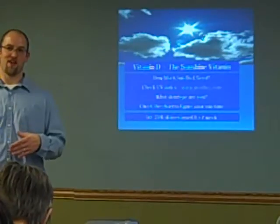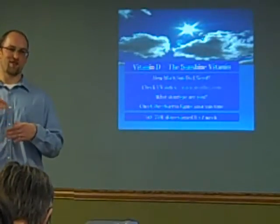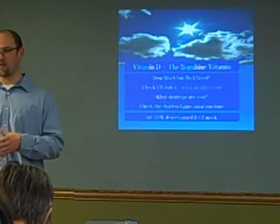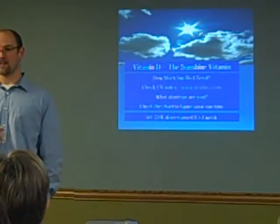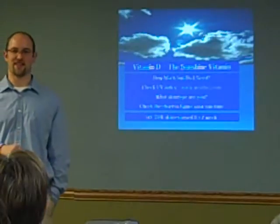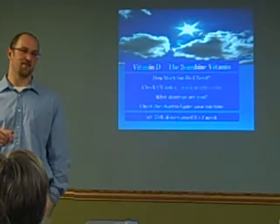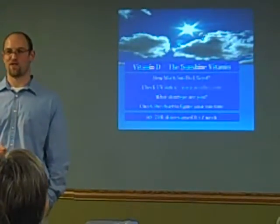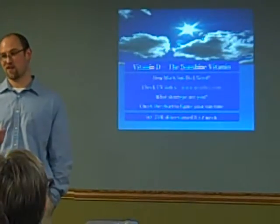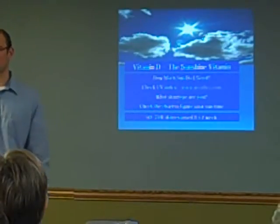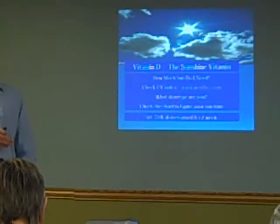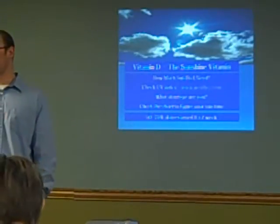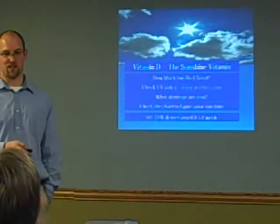Fortunately in Minnesota, our UV index never gets over two between October and April, just statistically as they look. Today it was a two because we had a nice, clear, sunny day. And so we checked the UV index today and it was a two. Last week it was cloudy and it was a zero. We checked the UV index in Florida last week and it was a zero. It was a cloudy day in Florida. So it was a UV index of zero. So when it's a cloudy day, no sunshine is coming down. We're not making vitamin D no matter what.